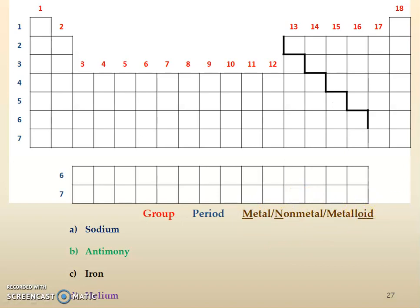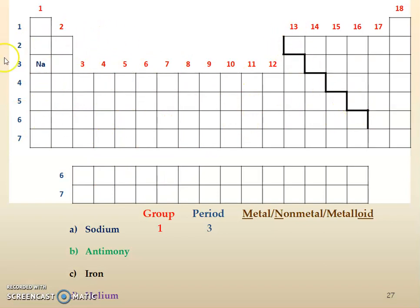Sodium: pause the video and find sodium on your real periodic table. Hopefully you found it right here. The group number is 1. The period number going across is 3. Sodium is to the left of the stair step line, so it's definitely a metal. It's not part of the transition or inner transition metals, so we're just going to label it as a regular metal.